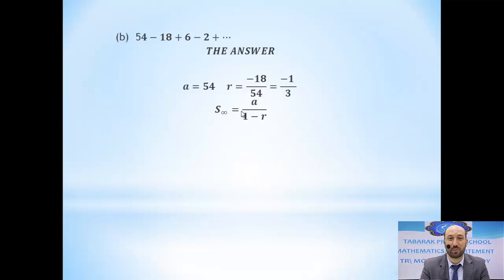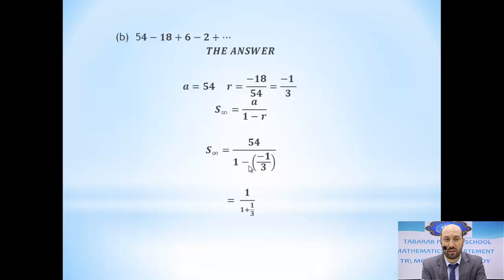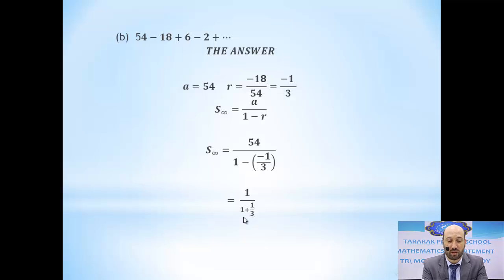The sum to infinity equals a over (1 minus r). Here a equals 54 and r equals -1/3. Substituting: 54 over (1 minus (-1/3)). Two negatives give a positive, so it becomes 54 over (1 + 1/3). Type it using your calculator and you will get 81/2.